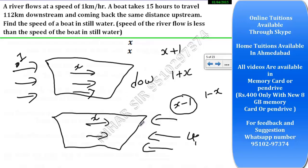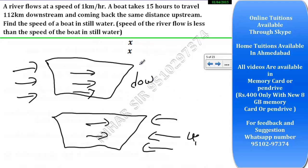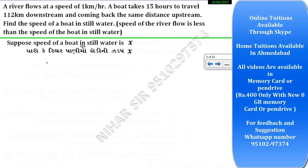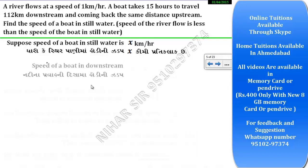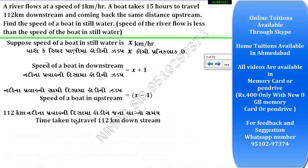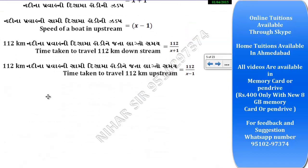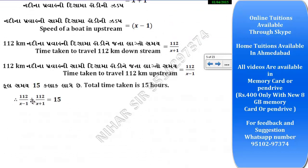If the flow is more than the boat speed, the boat will go in reverse. So x plus 1 can be written, and x minus 1 can be written. Let's suppose the speed of the boat in still water is x. Downstream speed is x plus 1, upstream speed is x minus 1. Time equals distance upon speed. Downstream time = 1.2 upon (x plus 1), upstream time = 1.2 upon (x minus 1). Total time is 15 hours, so we add them: 1.2/(x+1) + 1.2/(x-1) = 15.